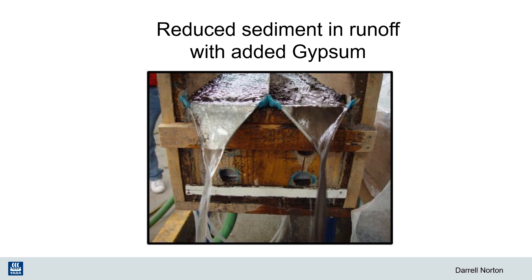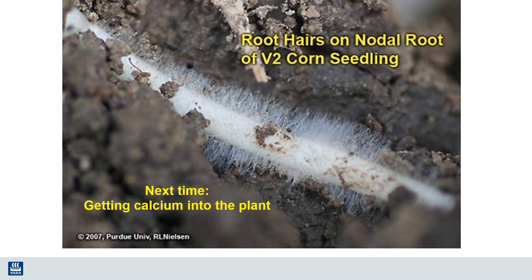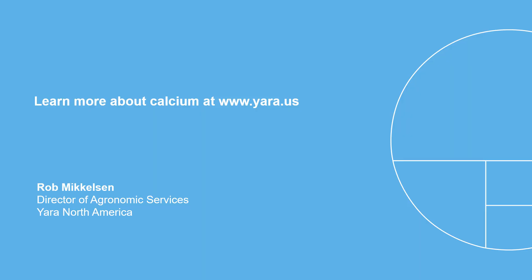Calcium has been known to be an effective amendment for reducing sediment loss and runoff. You can see the clean water coming from the trough on the left, which has received a gypsum treatment, compared to the very muddy water being eroded on the right. We've discussed many important functions of calcium in the soil today. In the next video, we will review the vital role of calcium in plants, how it is taken up by roots, and calcium's essential role in maintaining crop health. There are lots of great resources available, and a great starting point is your local Yara representative, who can answer your questions or help with problems of calcium nutrition.